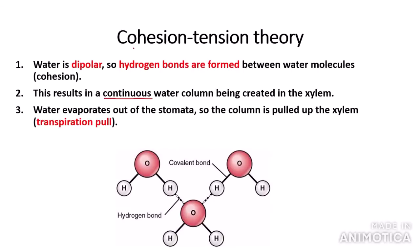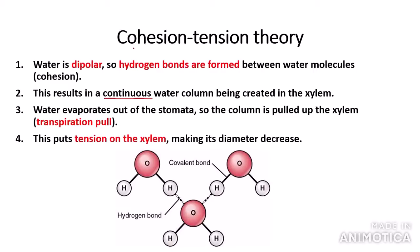The water column is then pulled up against gravity in the xylem due to the hydrogen bonding. Then water evaporates out of the stomata, so the column is pulled up the xylem — this is called transpiration pull. Transpiration pull is when the water column is pulled up the xylem due to the water vapour evaporating out of the stomata. This puts tension on the xylem due to the force of the water, making the diameter of the xylem decrease. This is actually the reason why tree trunk diameter decreases during the daytime, as heat from the sun increases temperature, increasing the rate of transpiration.